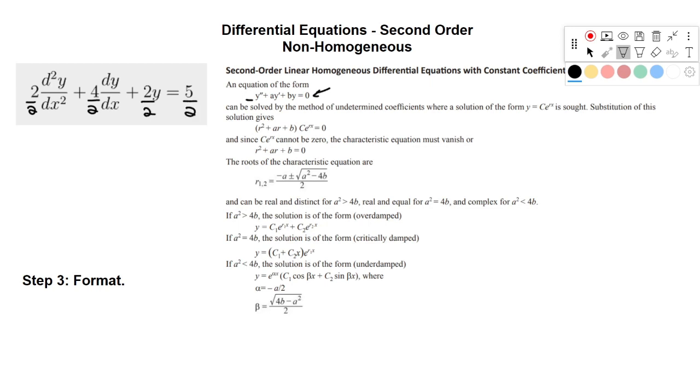And I'm going to replace these d squared y's and dy's with just primes, so y double prime and y prime. So what we'll end up with is y double prime plus 4 over 2, which is 2y prime, plus 2 over 2, which is just y, equals 5 over 2.